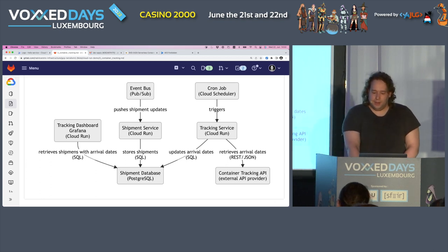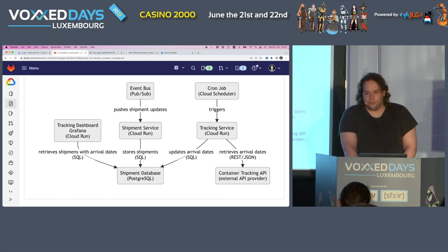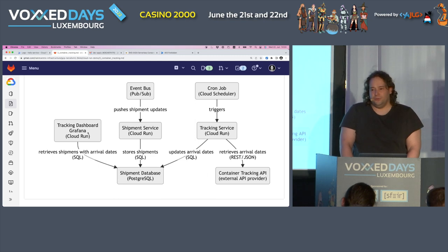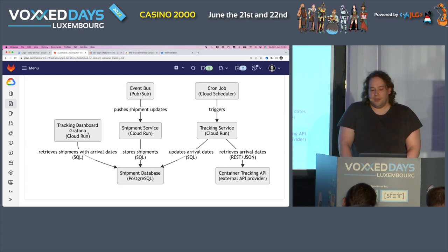They wanted to connect a tracking API. There are actually APIs you can use from external providers — you give them a container ID, a standard container number, or several other identifiers, and they tell you where the container is right now and when it's expected to arrive. The idea was to make this more transparent. For a UI, I wanted some kind of standard dashboard. I know Grafana is standard software from operations work, so I decided to use Grafana as a monitoring dashboard for these containers and shipments.